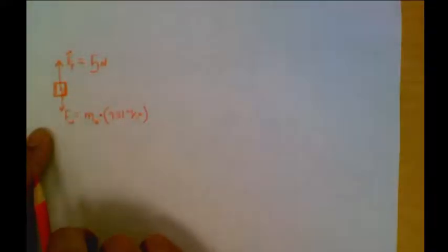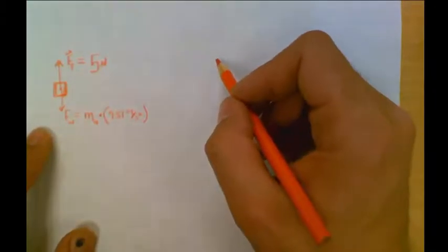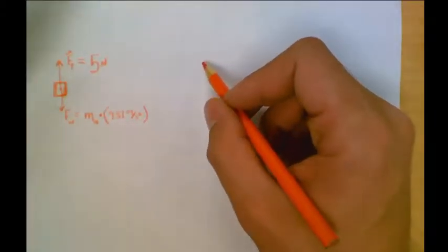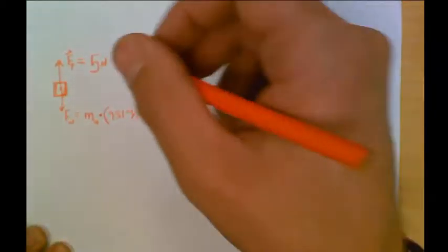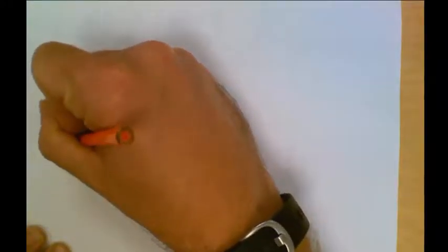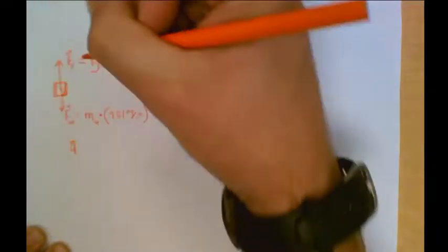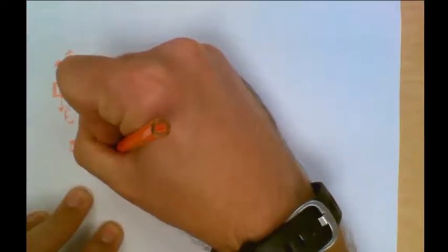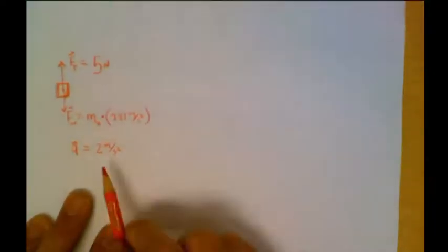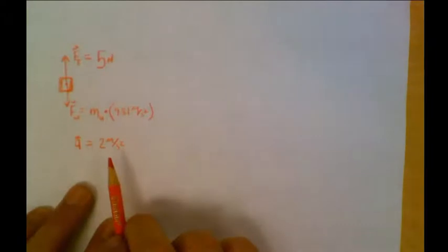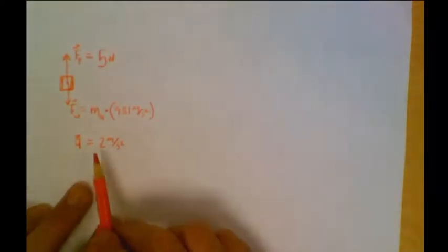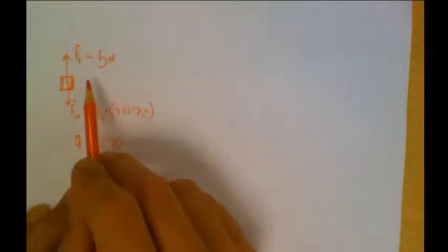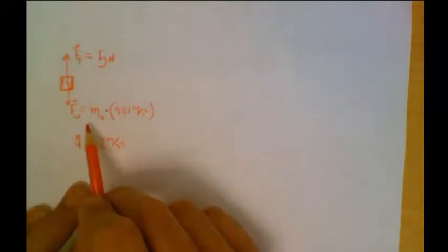So the other thing that we found yesterday is we found that the acceleration of the system was 2 meters per second squared. If you're not sure how we got that, that was part of yesterday's hint. You can go back and look at that. So we know our acceleration, we know our force of tension, we just need to figure out what the mass is.